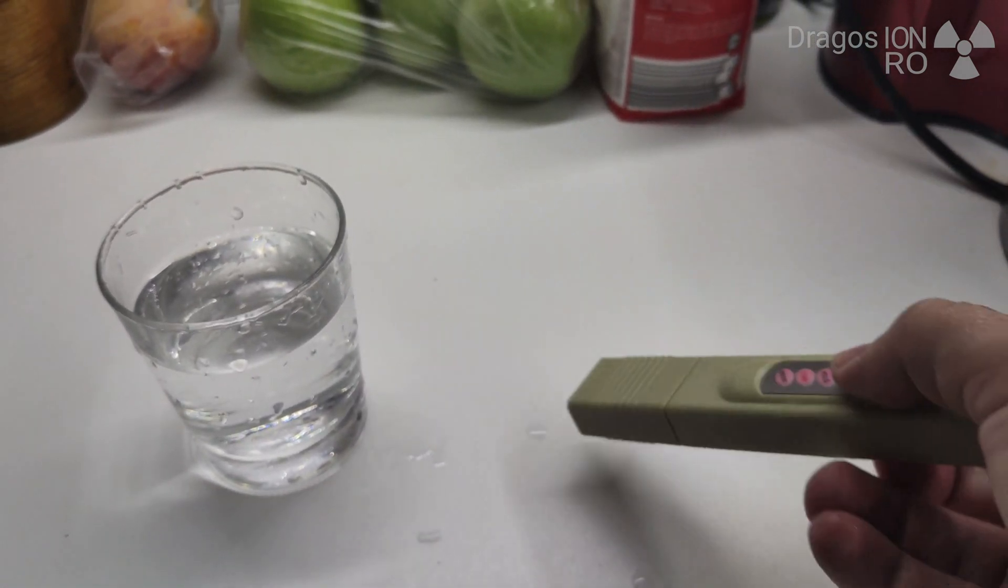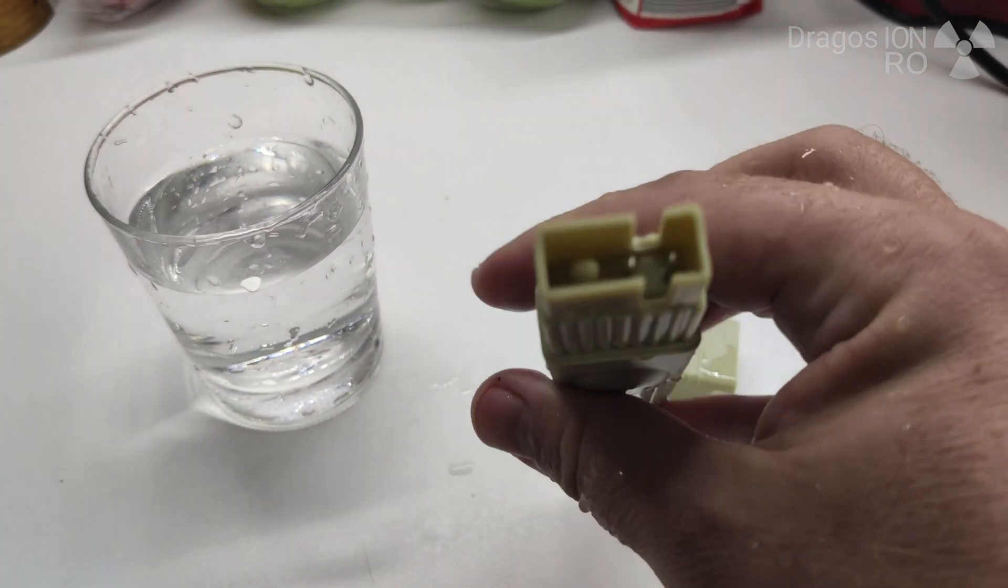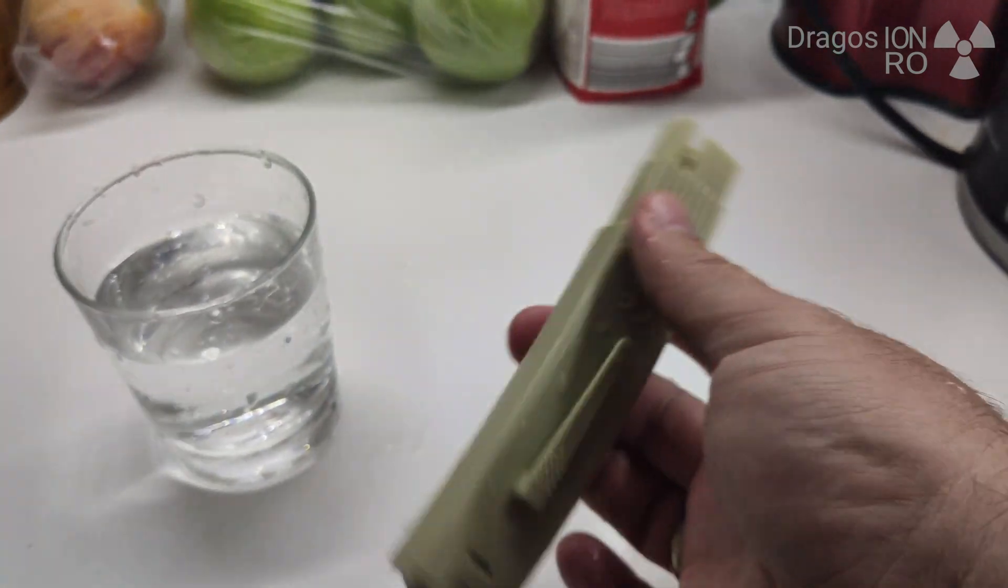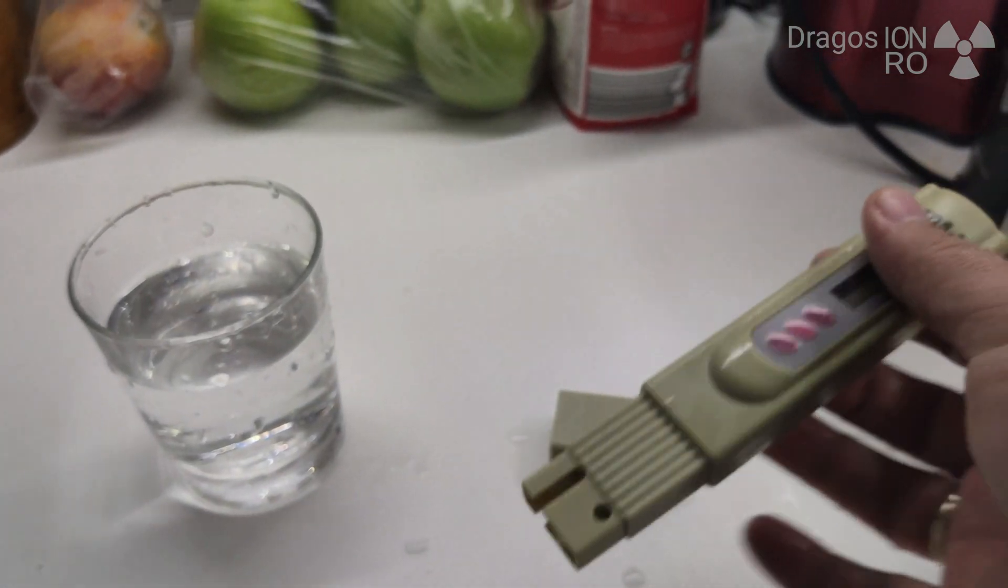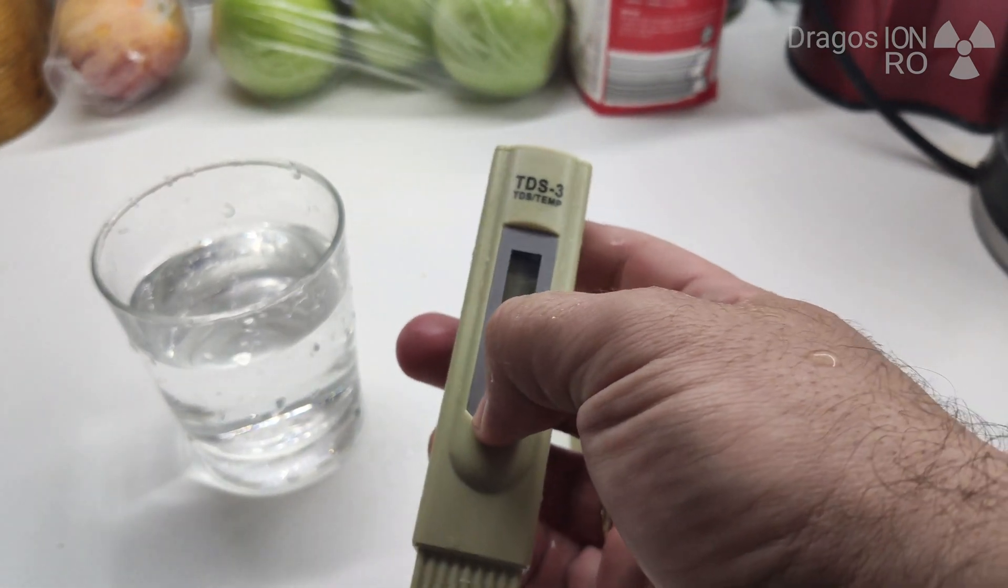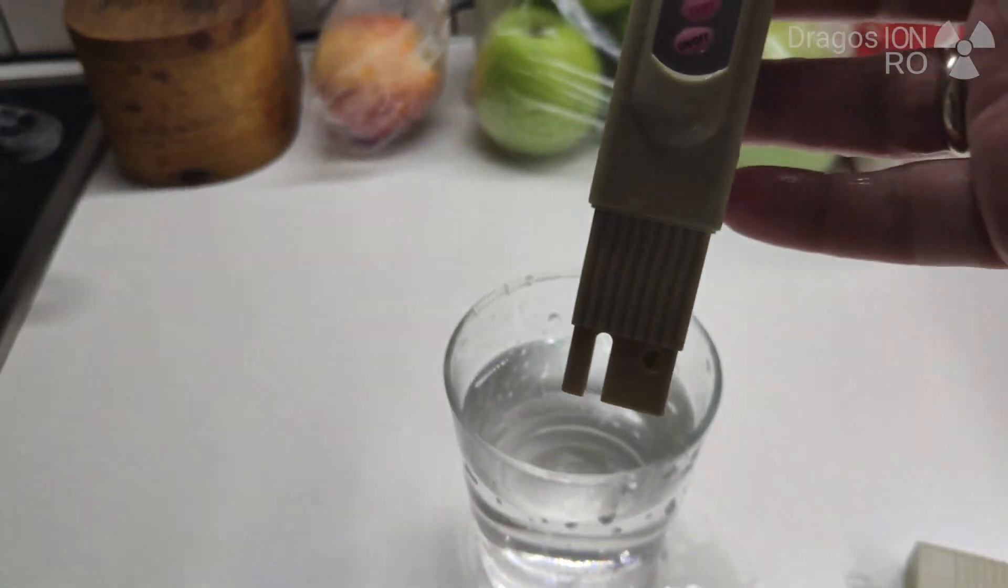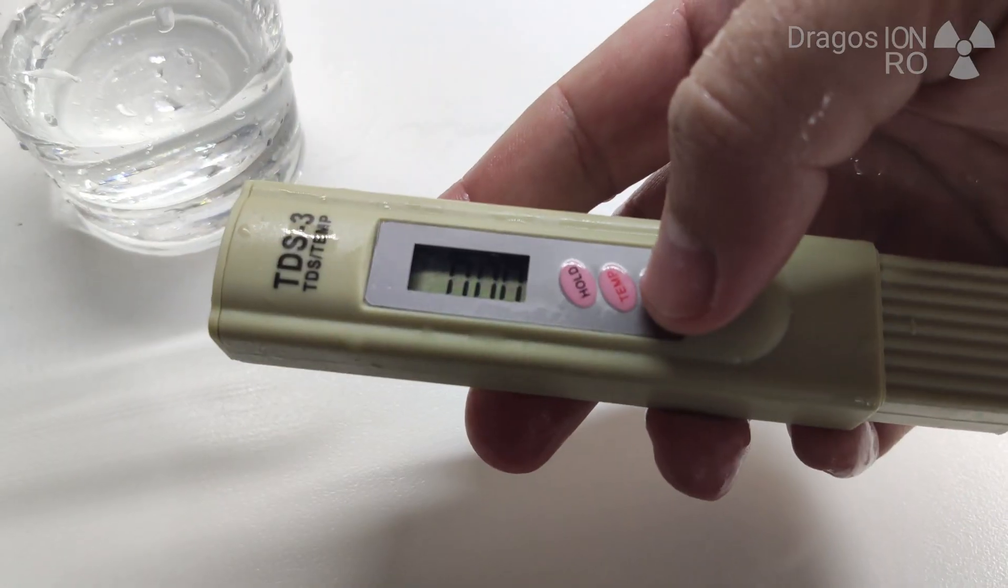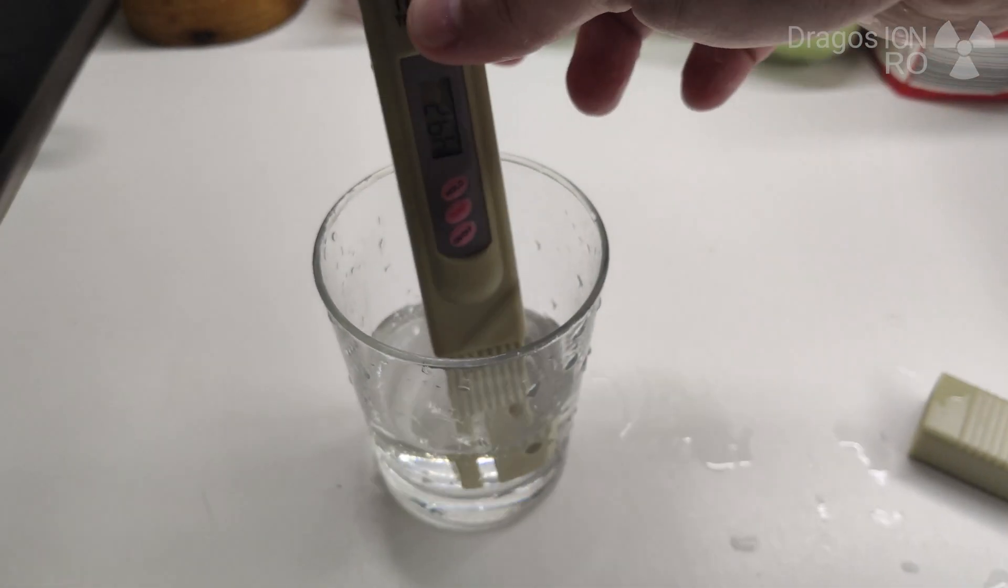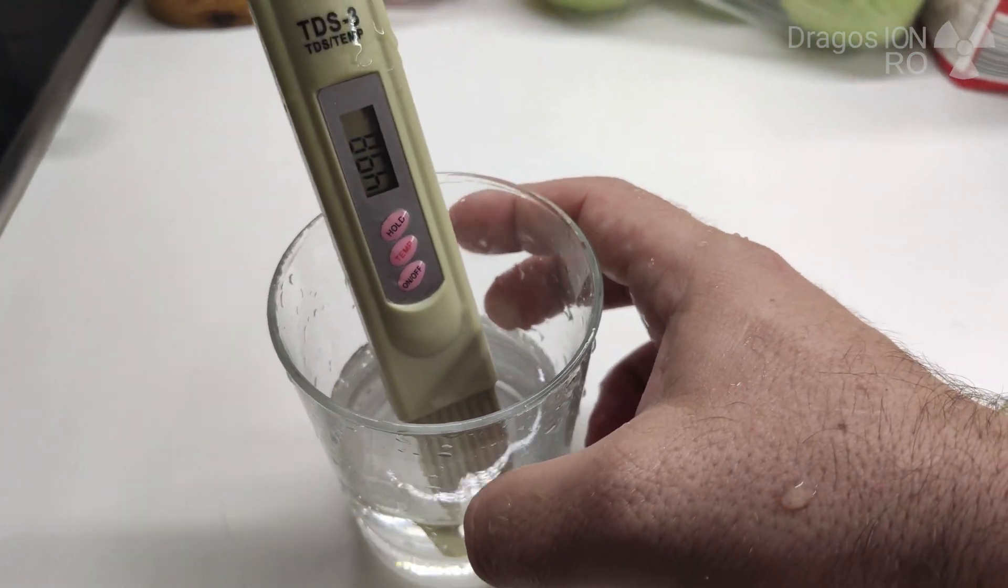So this is TDS 3, version 3. I don't really know much about them, but I know that they measure the conductance of electricity. It has two electrodes and a few buttons, and depending on how it conducts electricity, it will decide how many particles of minerals are dissolved in the water. So this is the TDS meter, measuring PPM values.